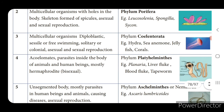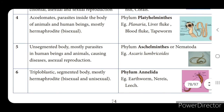Phylum Platyhelminthes — examples: liver fluke, blood fluke, tapeworm. They are mostly parasites, meaning they cannot produce their own food and depend on other organisms. They live as parasites inside the body of animals and human beings. Mostly hermaphrodite, meaning bisexual — both sex organs are present. They have an unsegmented body and reproduce by asexual reproduction.